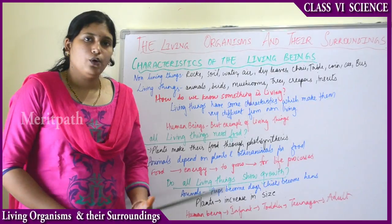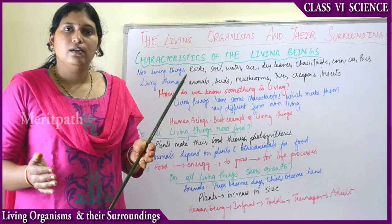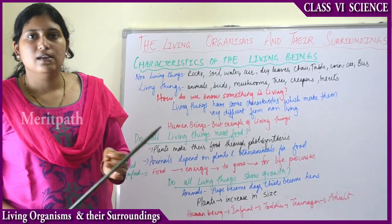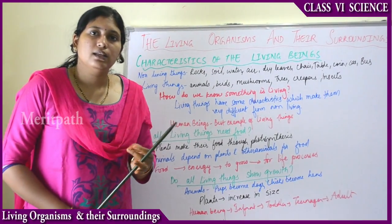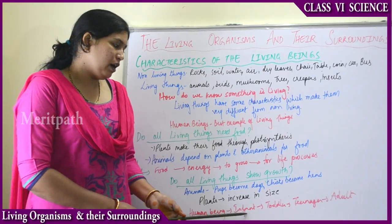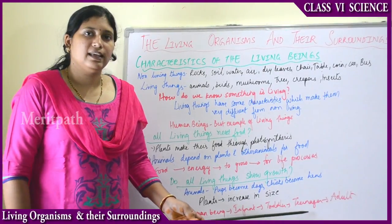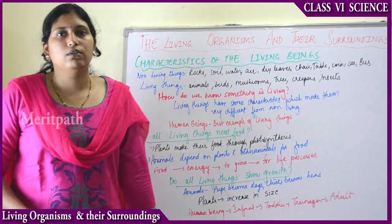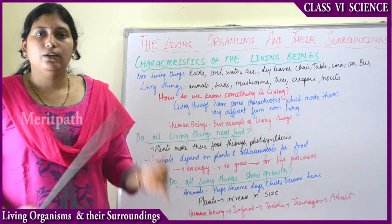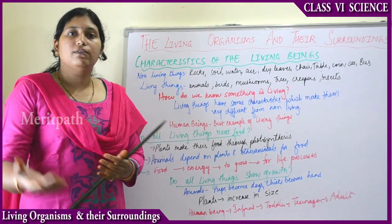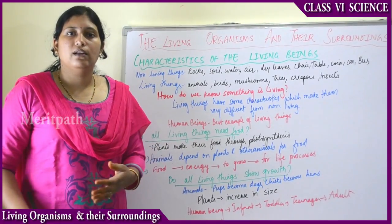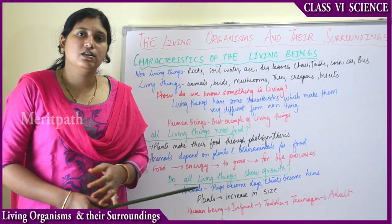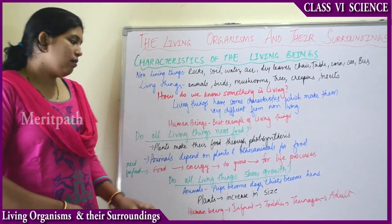Human beings also show growth. When a child is born, they are very small — just a few centimeters. As age increases, height increases, body size increases, both in length and width. An infant becomes a toddler, a toddler becomes a teenager, and a teenager becomes an adult. The clothes that fit you at one or two years old do not fit now — because there is growth in our body. Hair also grows as age increases, and secondary characteristics develop as we become adults.